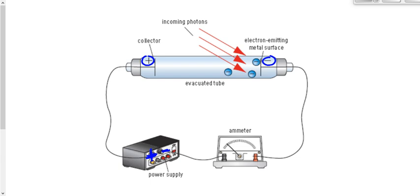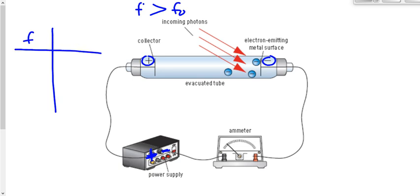We have incoming photons that are all above the threshold frequency. The frequency of the photons is above the threshold frequency, which means those photons are each going to cause electrons to be ejected. One photon causes one electron — 50 photons would cause 50 electrons — because they're all above the threshold frequency. So we take a certain frequency of EMR and we shine it on this metal surface. We find that one electron for each photon is ejected, starts moving with a certain amount of kinetic energy, and gets attracted to this collector and ends up flowing around.